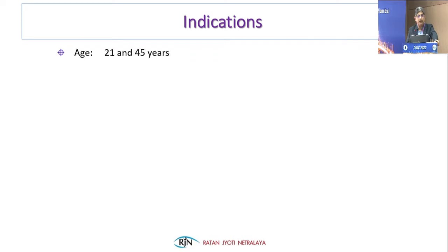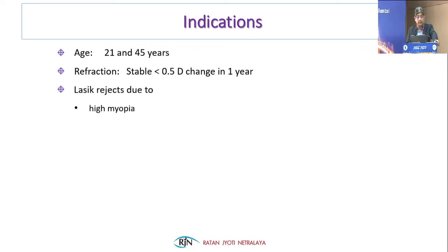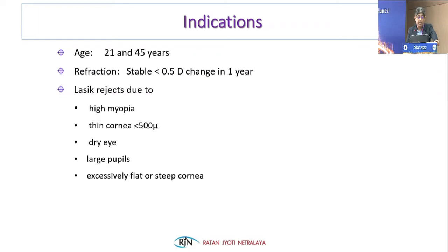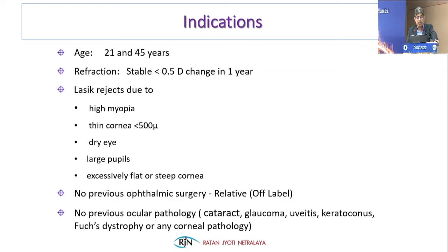Coming to the workup — most requirements are the same as any other refractive case. Age group is 21 to 45 years, stable refraction with less than 0.5 diopter change in the last year. Indications include high myopia not correctable by SMILE or LASIK, corneal thickness less than 500 microns, severe or significant dry eye, large pupil size, excessively flat or steep corneas, or cases where LASIK cannot be done. There is no previous ophthalmic surgery — a relative contraindication — though we now operate on treated and stable keratoconus. There should be no previous ocular pathology such as cataract, glaucoma, uveitis, keratoconus, Fuchs dystrophy, or other corneal pathology.